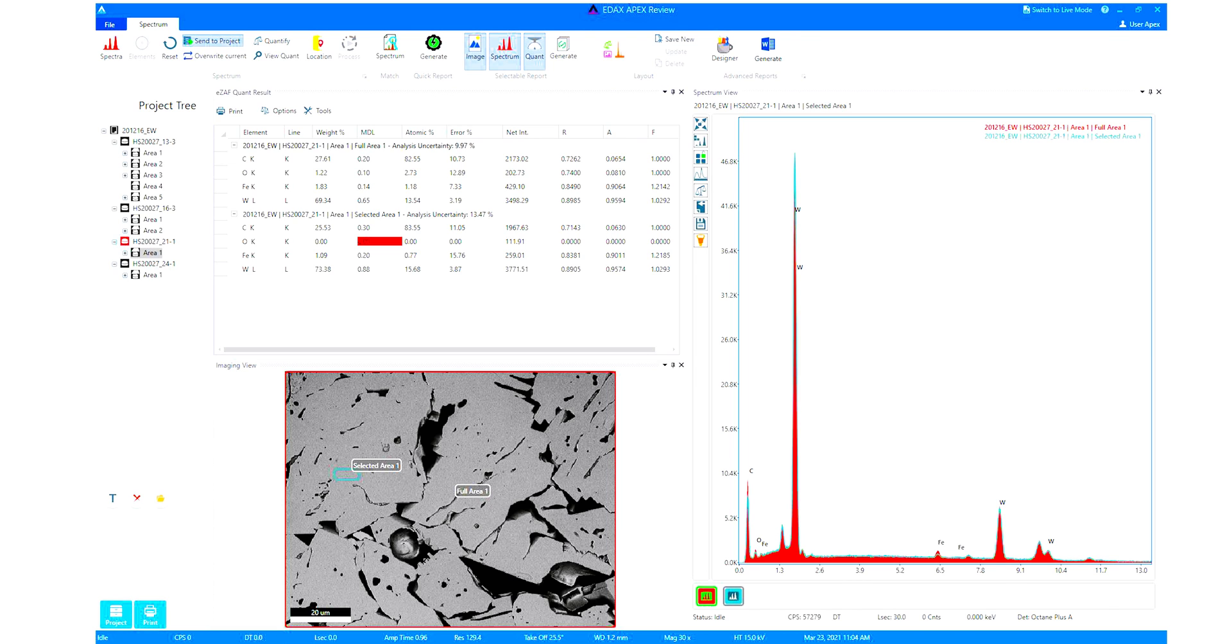In this case, it's carbon, tungsten and iron. So I know this is something of hard metals, tungsten carbide sample. And you also can get the quantification. So how much of each element is in the sample.